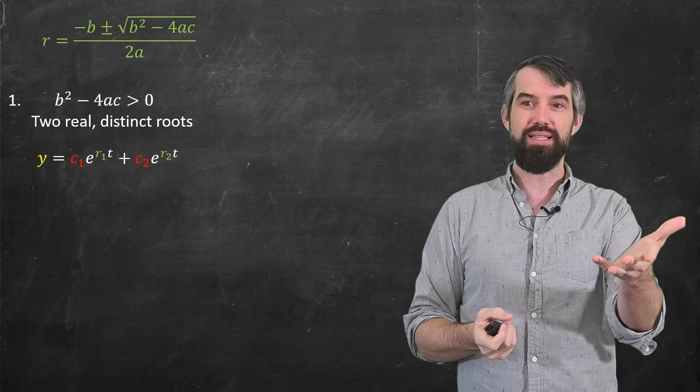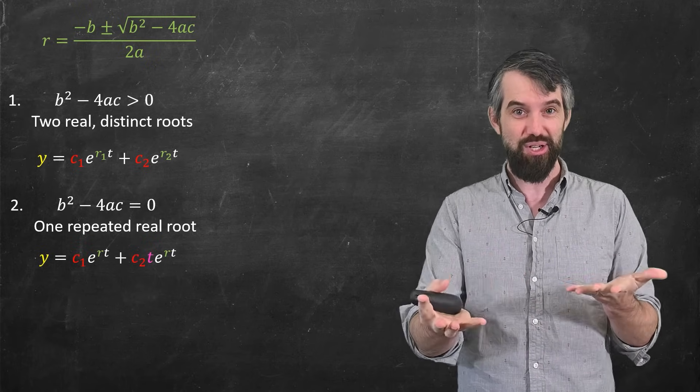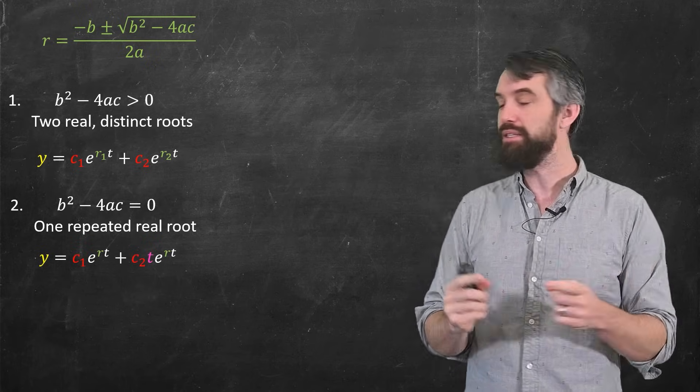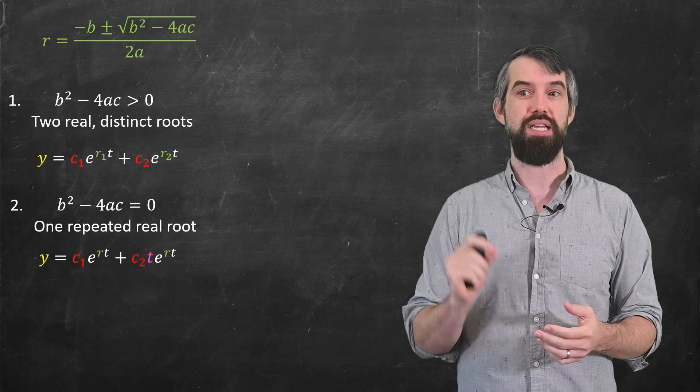But it could also be the case that the thing under the square root is 0, in which case you get plus or minus 0. It's a repeated root. In that case, the guess is e to the rt, but then the second one is te to the rt.